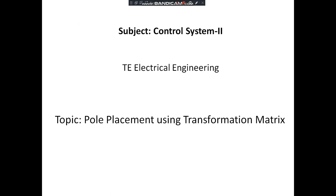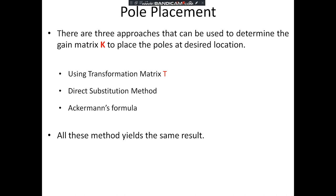Today we are going to discuss the subject Control System 2 for electrical engineering, with the topic of pole placement using the transformation matrix. In our previous lecture we covered the pole placement technique used for controller design and to determine the state feedback gain matrix K. There are three approaches to determine K: the transformation matrix T method, the direct substitution method, and Ackermann's formula.